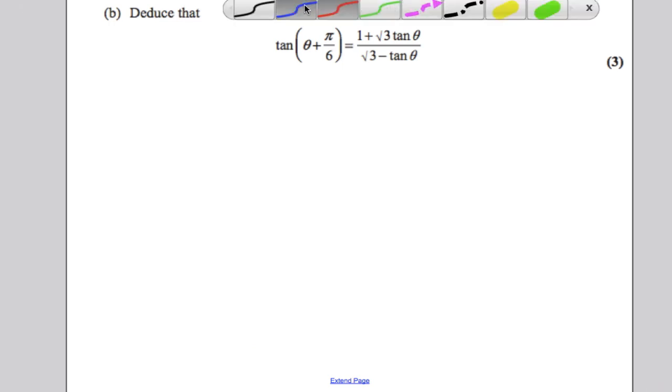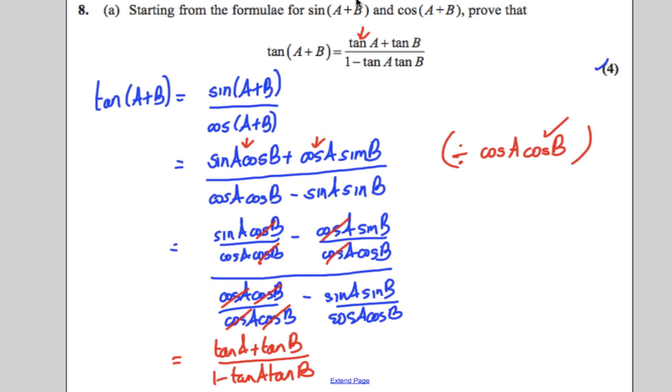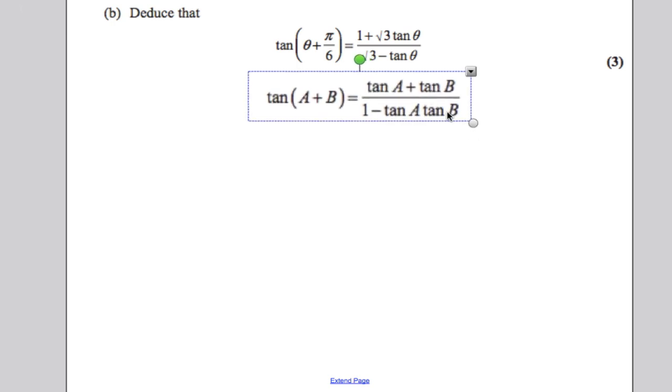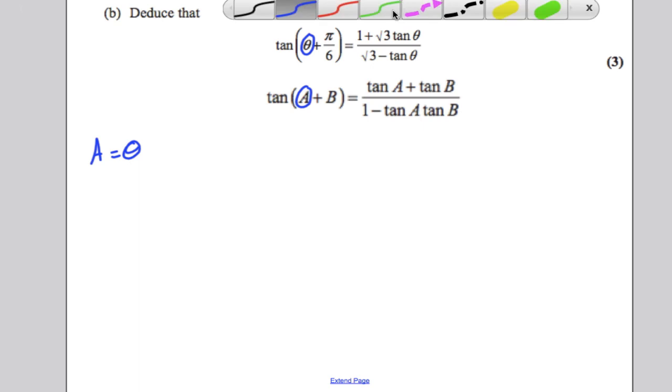Next, deduce that the following is true. So let's go back to what we've been told. Because deduce means using what you've just proven, I'm going to copy this just so that we can make it absolutely clear how easy part B's marks are. Now we have to deduce the above using the following. It's very straightforward. For three marks, all you've got to say is let A equal theta, and then we're going to let B equal pi by 6.